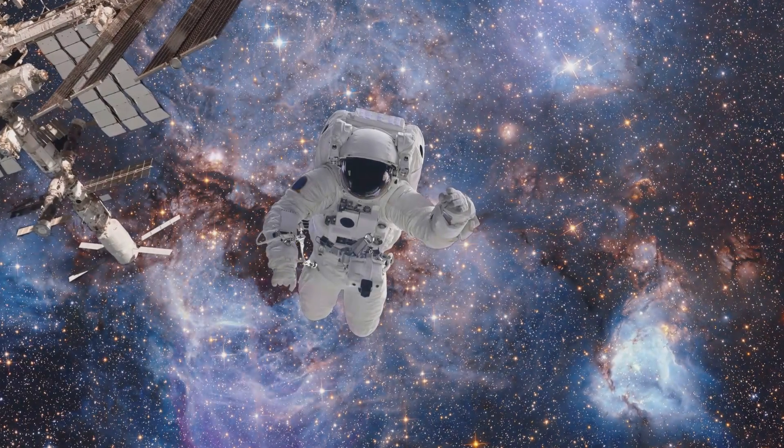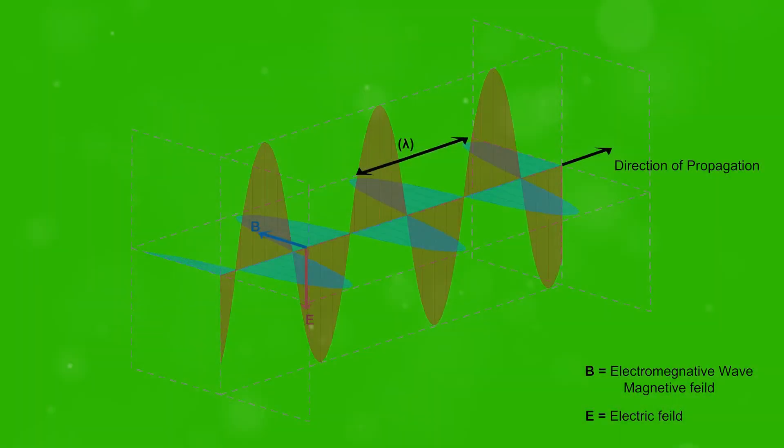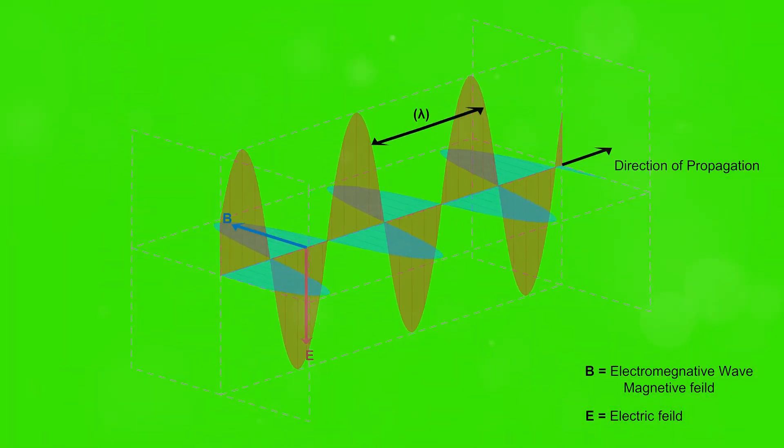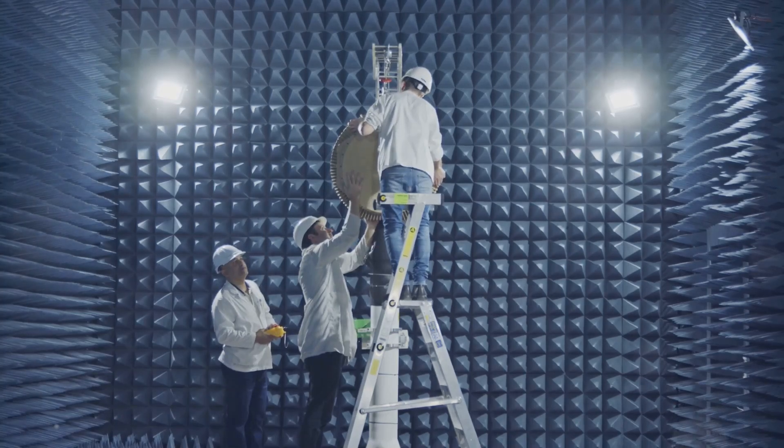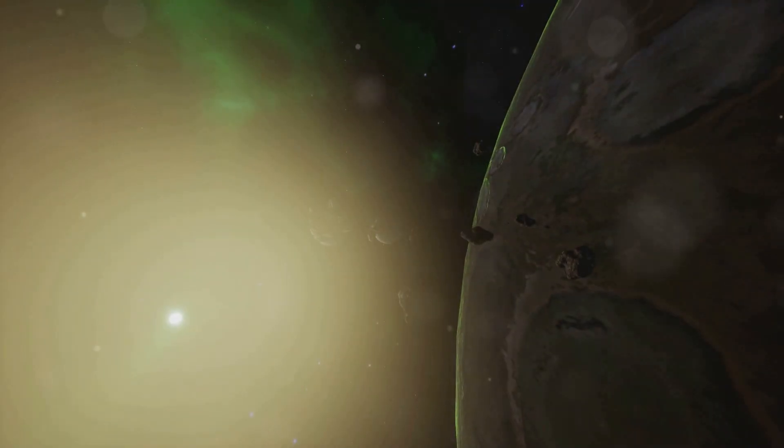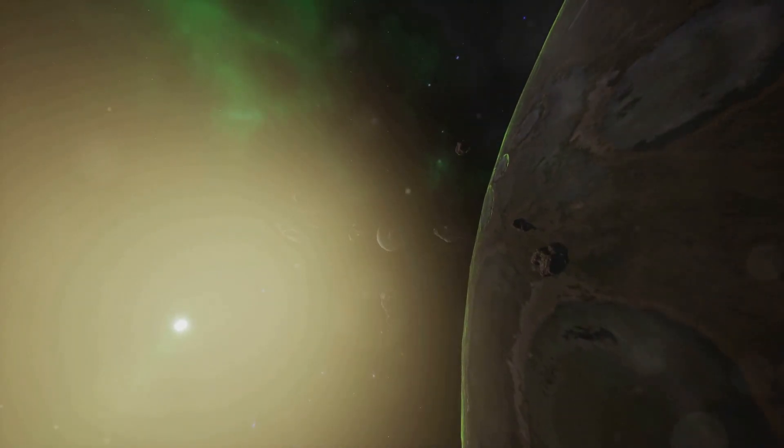But how do we hear these sounds if space is a vacuum? Well, sound waves can't travel in space, but electromagnetic waves can. Scientists convert these waves into sound waves that we can hear, allowing us to experience the strange, otherworldly sounds of space.